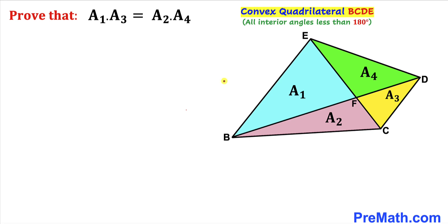Welcome to pre-math. In this video we have got this convex quadrilateral B, C, D, E such that BD and EC are its diagonals, as you can see in this diagram. As a result we get four triangles.